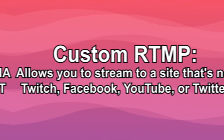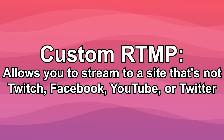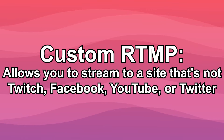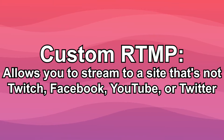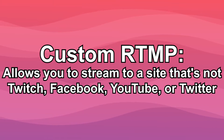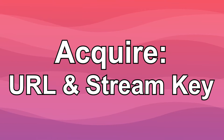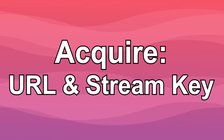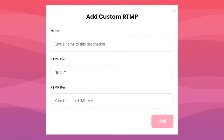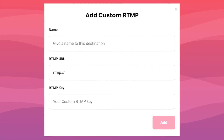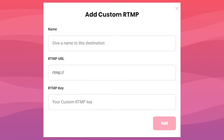Streaming using a custom RTMP can seem a little scary and overwhelming, but it's super easy. Just to recap, a custom RTMP allows you to stream to a site that's not Twitch, Facebook, YouTube, or Twitter. All you need is the URL and stream key, which you should know from the destination where you're sending your stream.